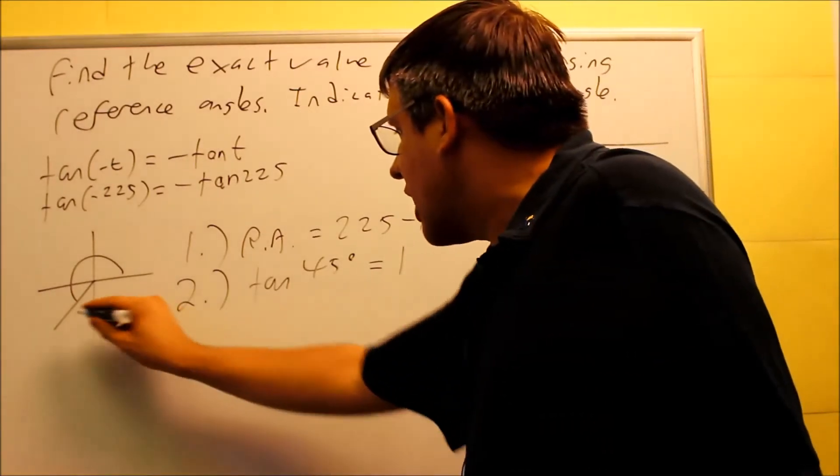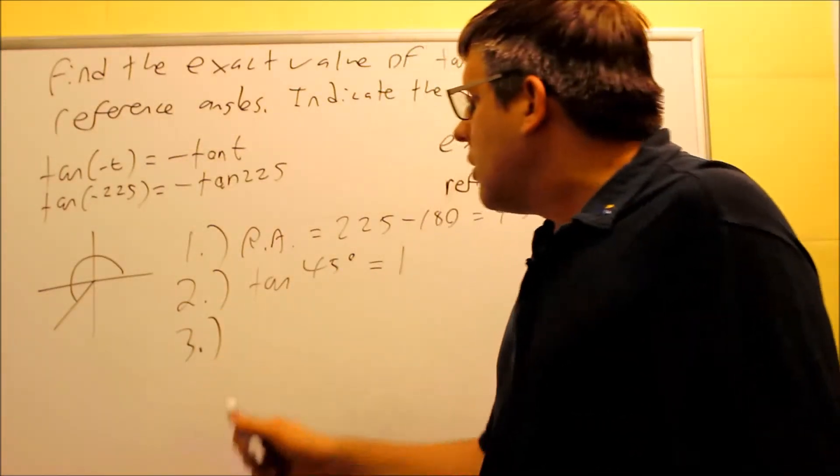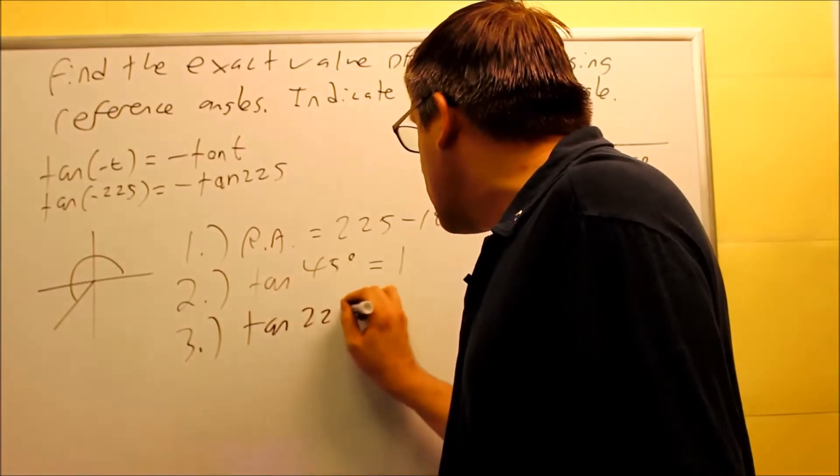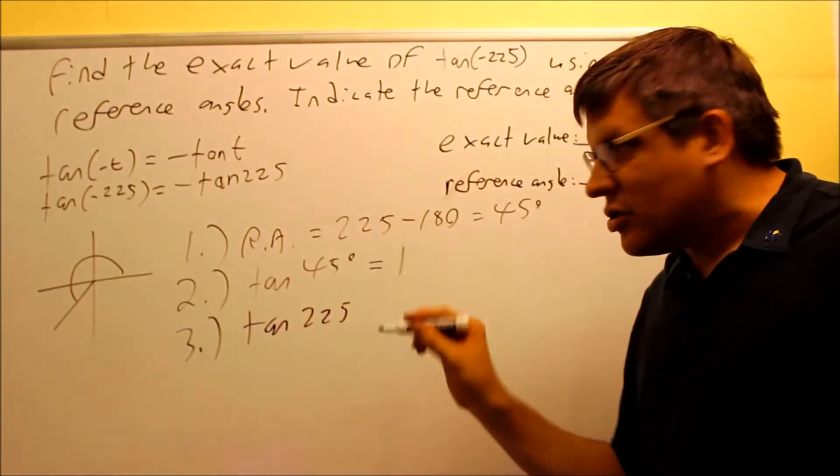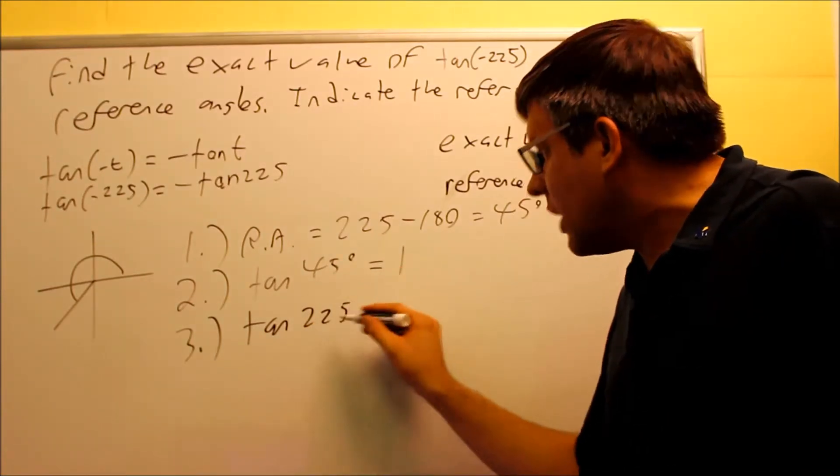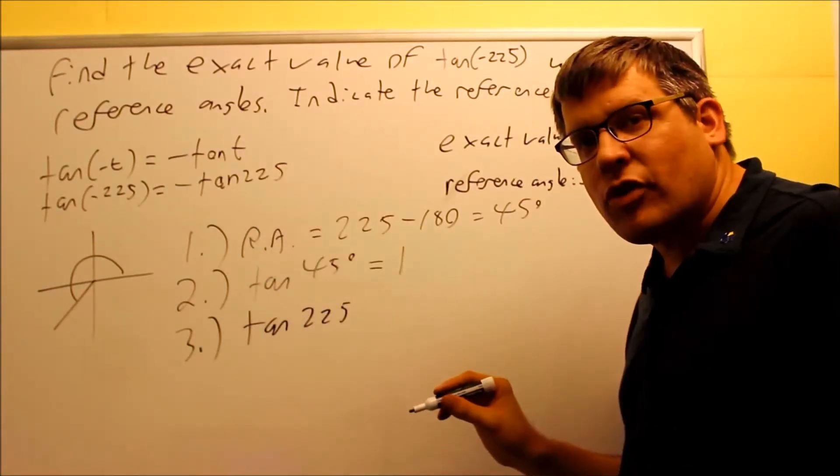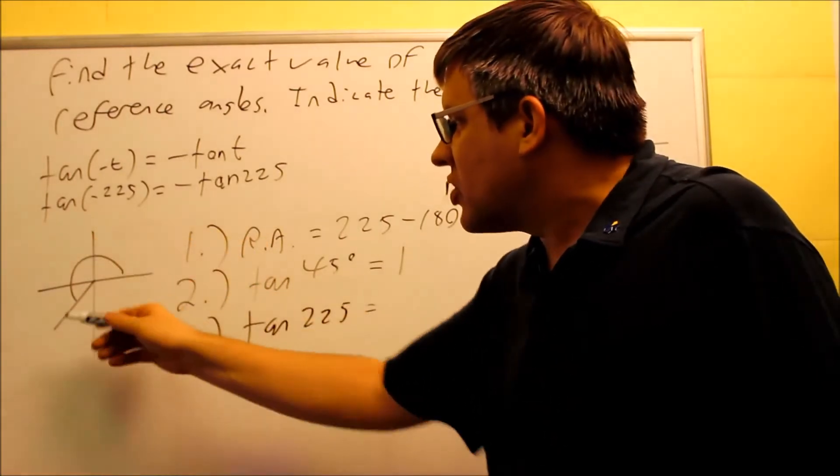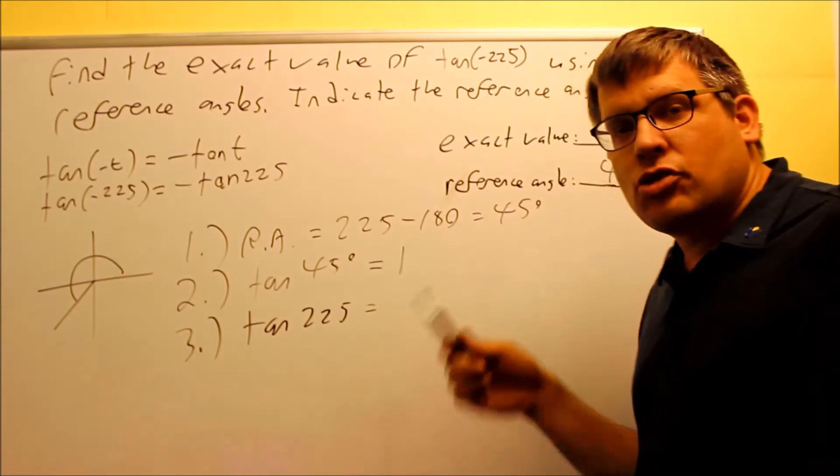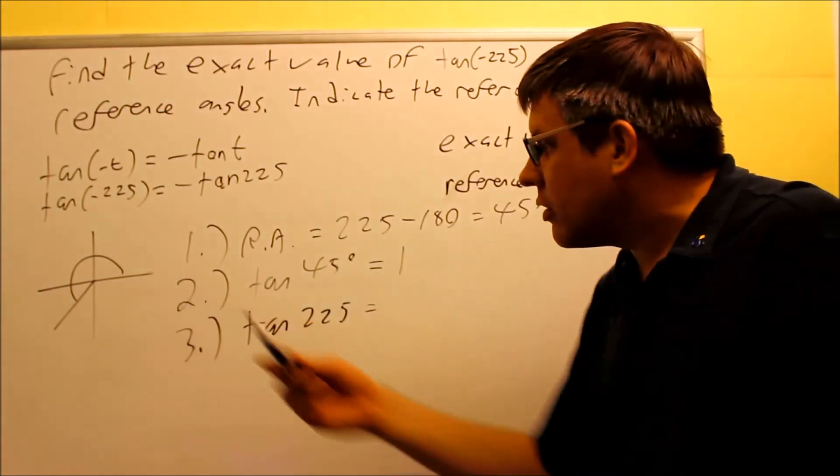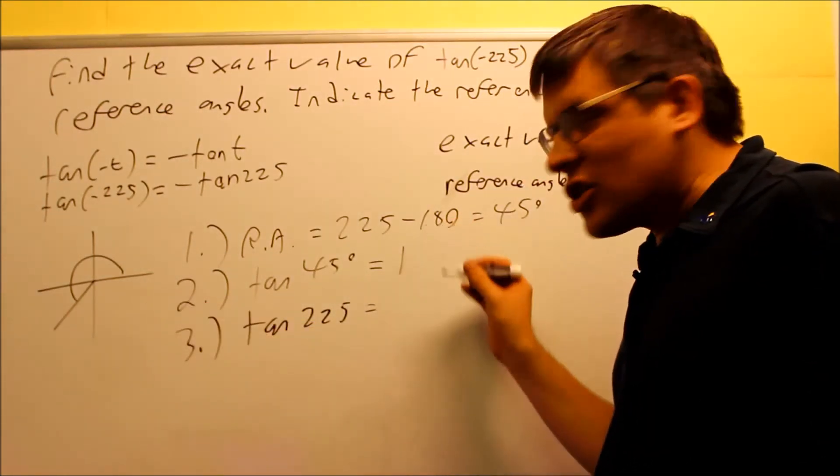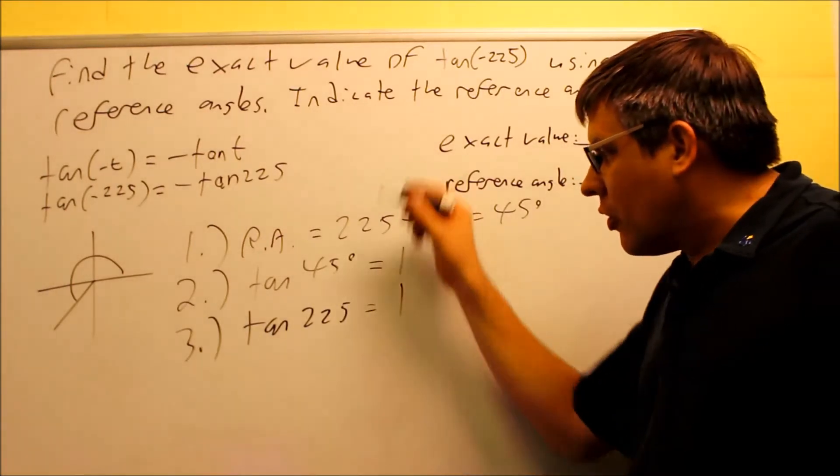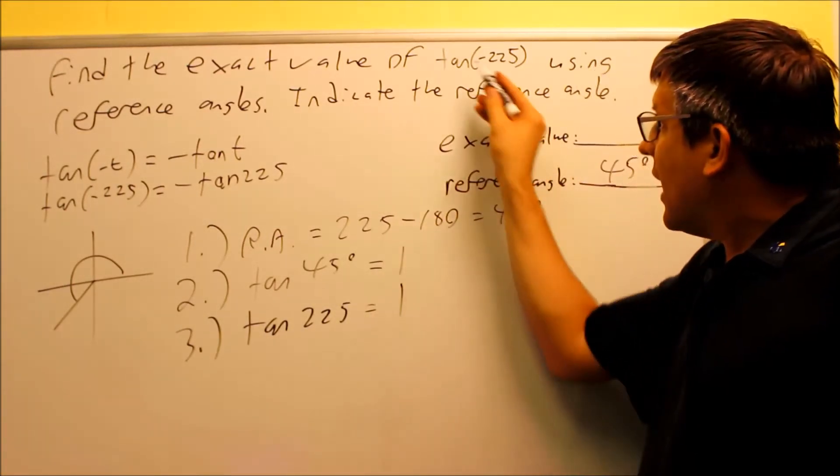Now I have to apply the appropriate sign. I want to find tan(225). All Students Take Calculus: tangent represents T, so tangent should be positive in the third quadrant. I don't have to make a sign adjustment here. Tan(225) is going to equal 1.